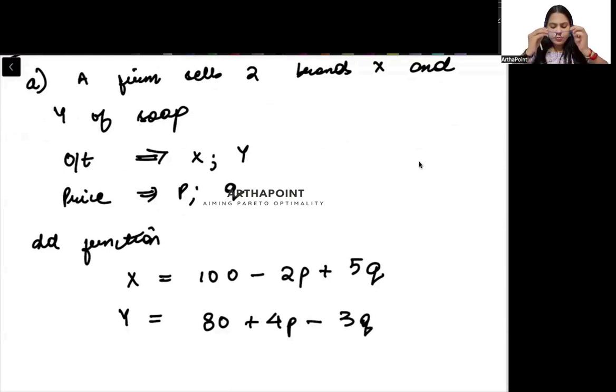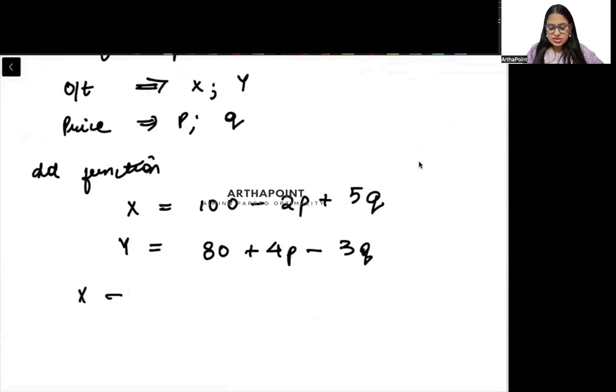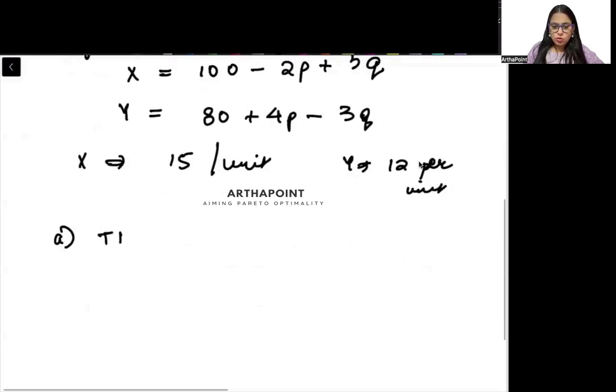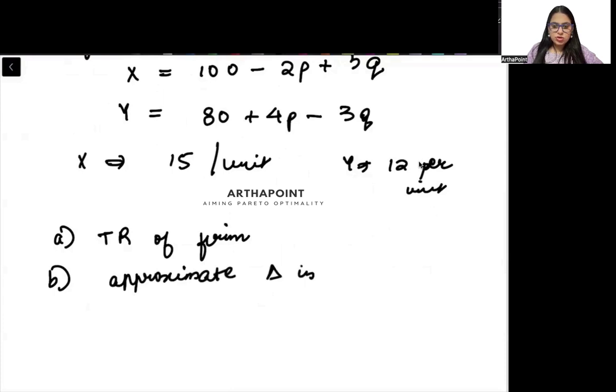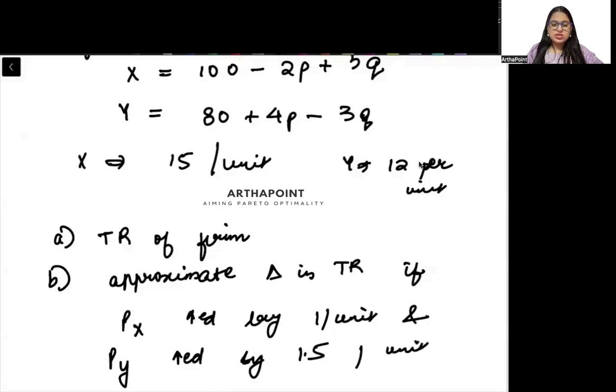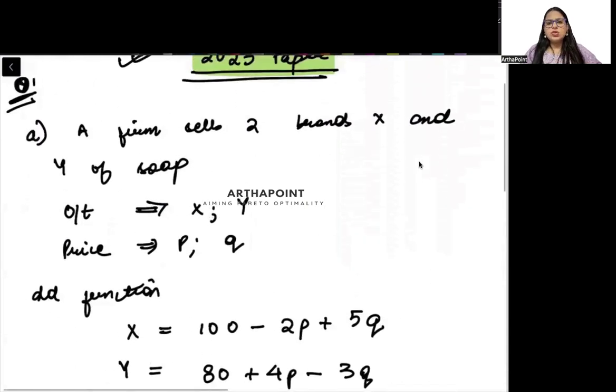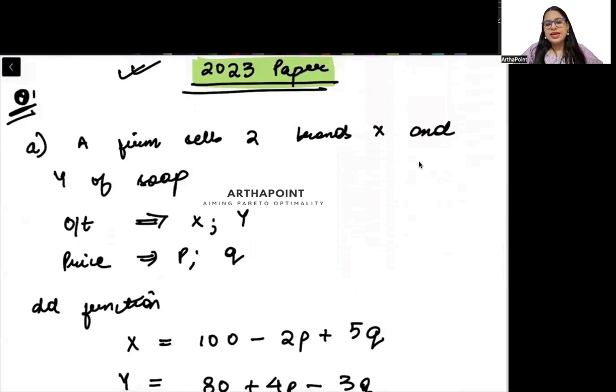The question says suppose brand X sells for 15 per unit and Y sells for 12 per unit. You need to find out the total revenue of the firm. Second thing, you need to find the approximate change in total revenue if the price of good X is increased by 1.5 per unit and price of good Y increased by 1.5 per unit. This is the entire question of 2023, question number 1A - a firm selling 2 brands, good X and good Y.